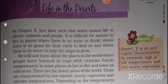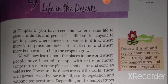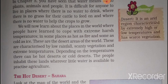What is a desert? Desert is an arid region characterized by extremely high or low temperature and has scarce vegetation. Desert is a particular place which receives extreme weather — it may be very hot or very cold. Desert is not only hot places; it also includes cold places.